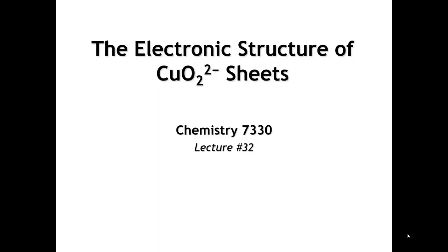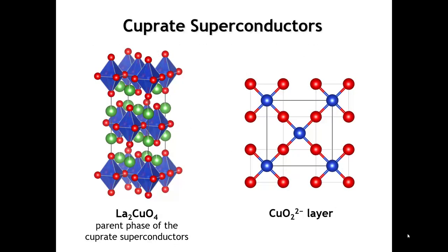In this lecture, we're going to continue our exploration of electronic band structures. We're going to remain in two dimensions, but we're going to look at something a little more realistic and interesting than a sheet of hydrogen atoms. The topic of this lecture is the CuO₂²⁻ layer. I picked this example for a couple of reasons: we now have a structure that contains two types of atoms, which is something we haven't talked about yet. But the copper oxide layer is more than just a textbook example — it is the key building fragment in a whole family of very interesting compounds called the cuprate superconductors.